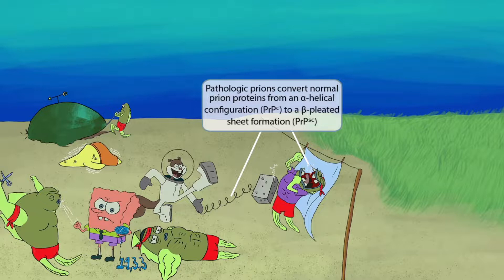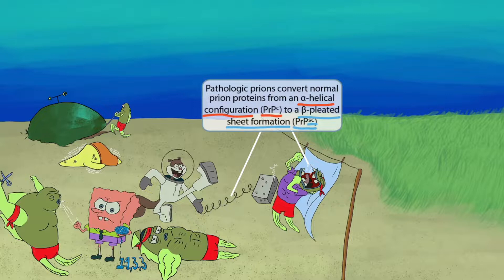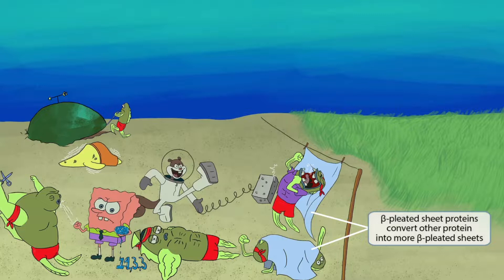PRPC indicates normal prions, which are found in normal healthy brains and are in the alpha helical configuration. These become problematic when they get converted to the beta-pleated sheet formation, termed PRPSC. Remember that PRPSC is the abnormal pathologic form by focusing on the S — S for stupid, as in these PRPSC proteins are stupid. Notice that the guy getting knocked back into the sheets has knocked over his two buddies, causing them to be wrapped up in sheets as well. This represents the fact that once prion-altered beta sheets are formed, they convert yet more proteins into this beta sheet configuration, perpetuating the damage created by these PRPSC pathologic prions.